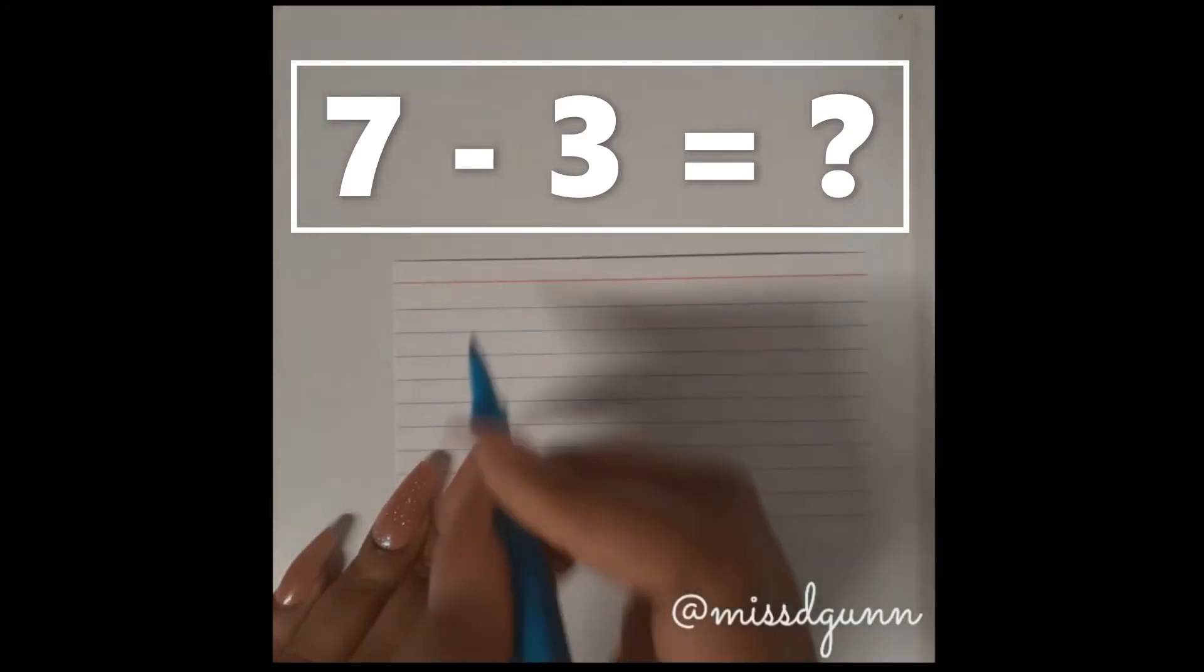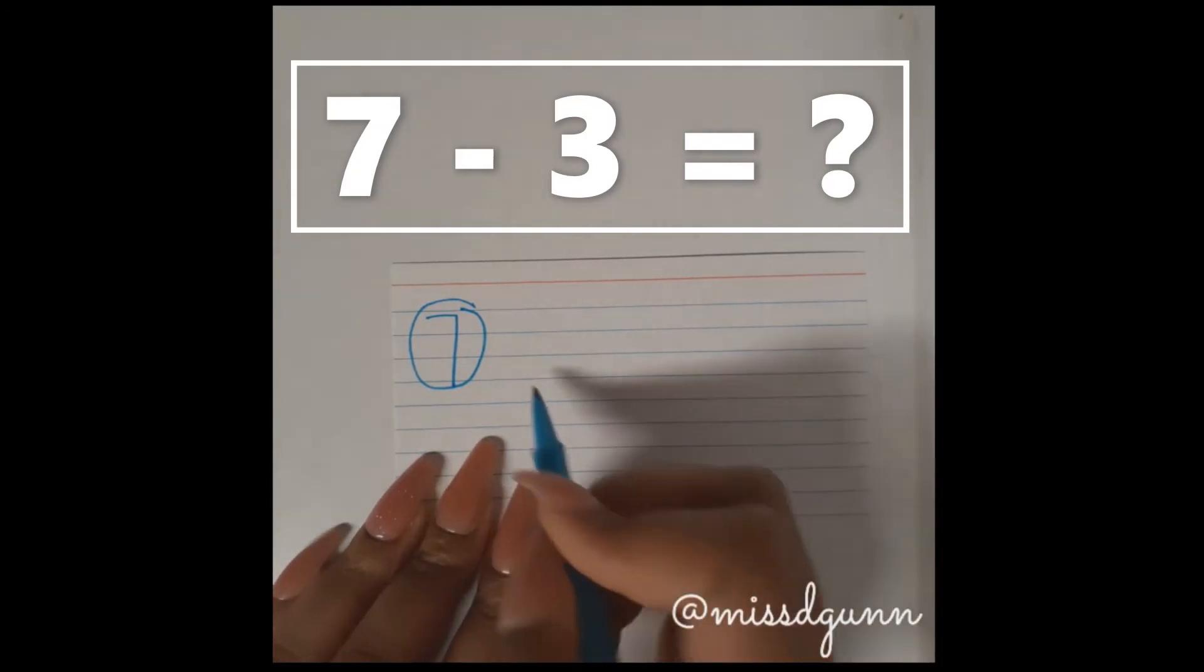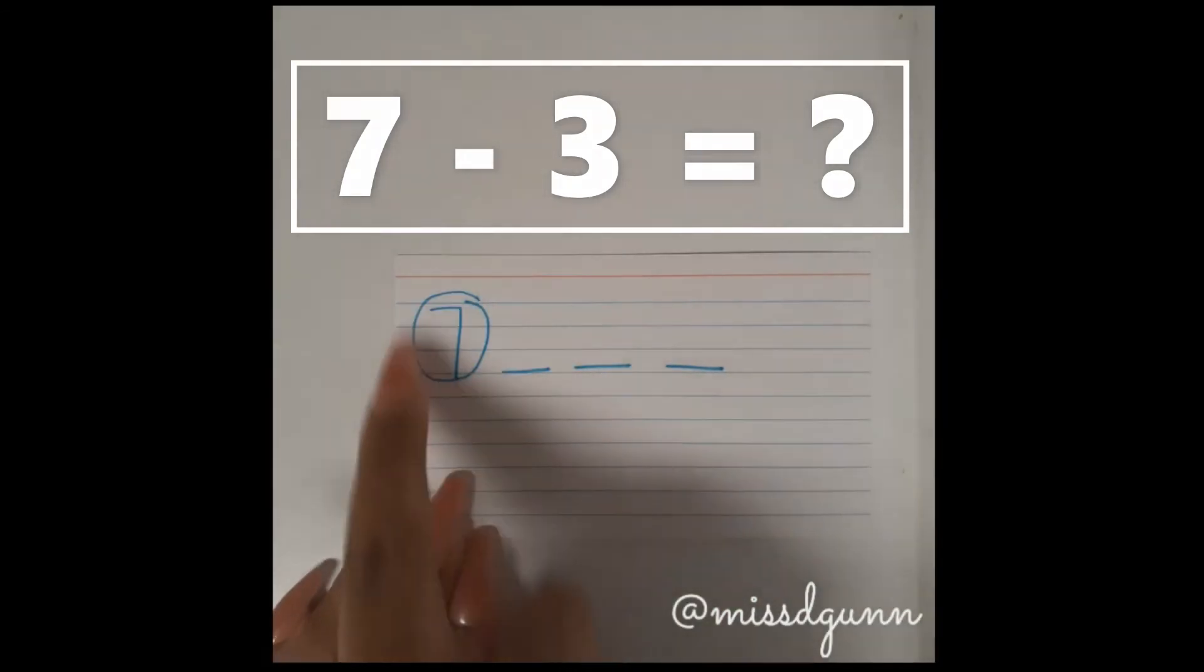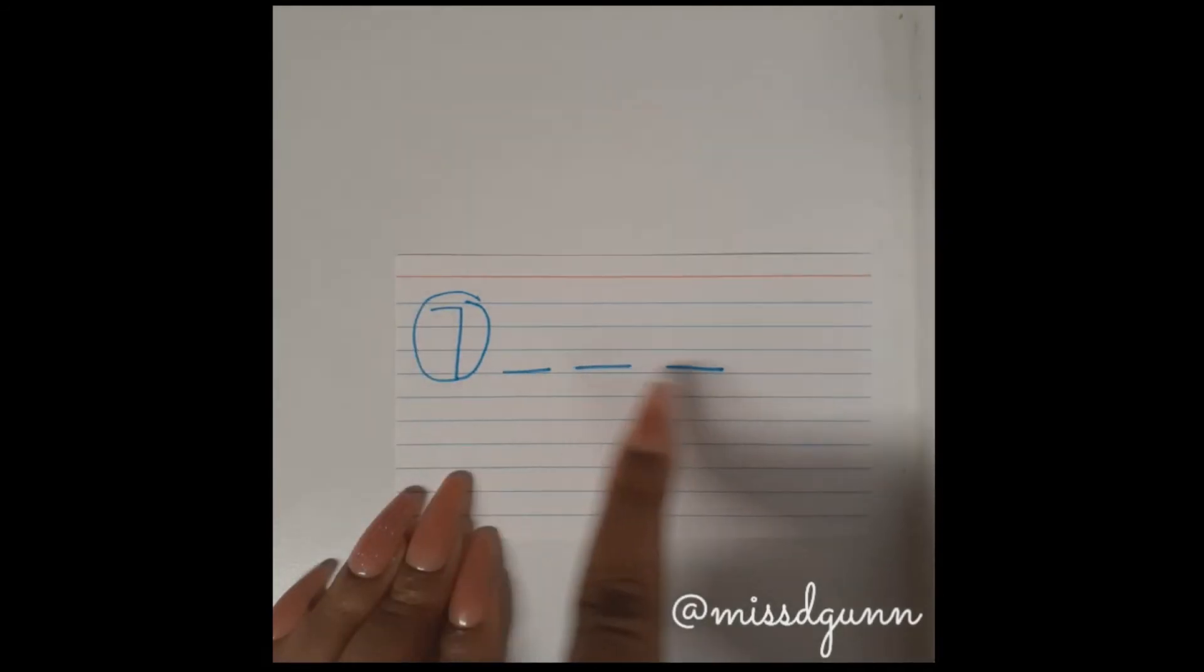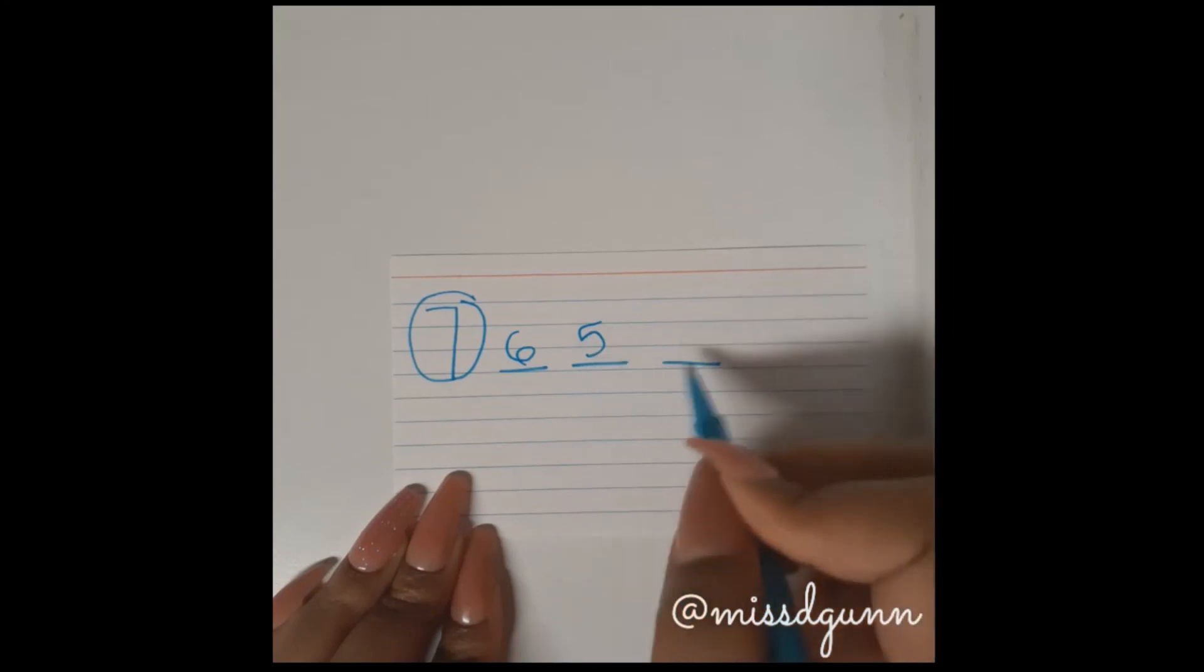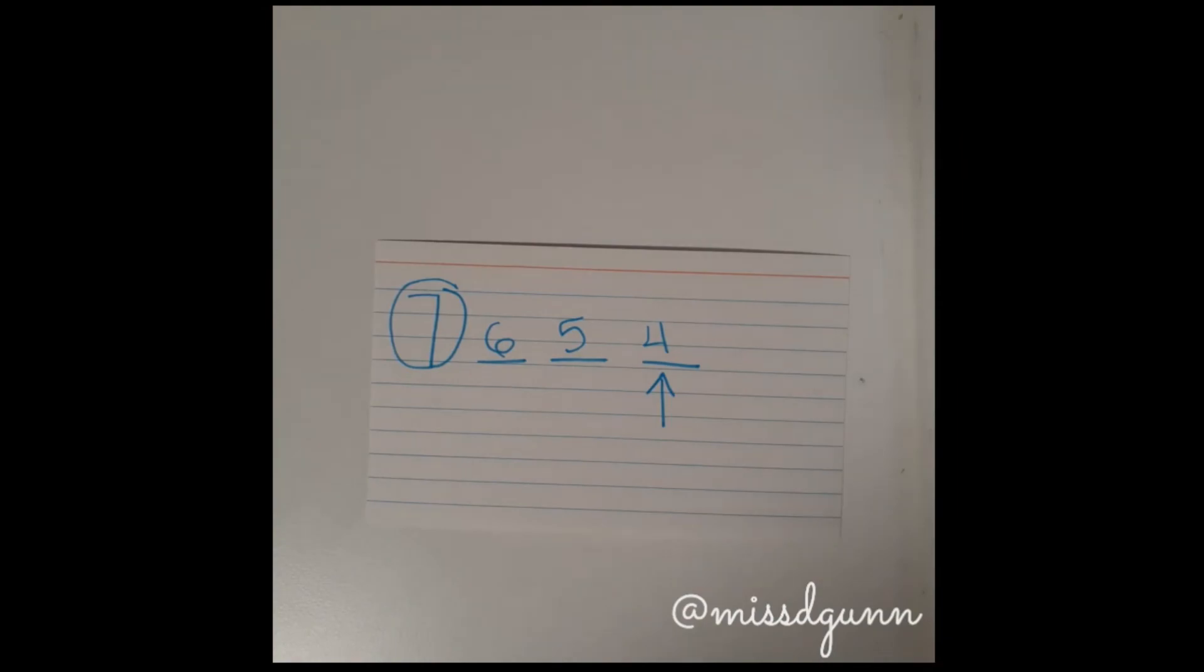Same thing for subtraction. They would write the minuend first and circle it, and then they would draw the number of spaces they're expected to take away, and then count backwards. Or they can go ahead and write those numbers. They still need to count backwards, and the last number that they write would be their answer.